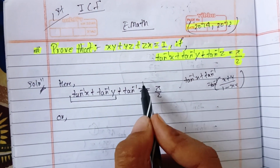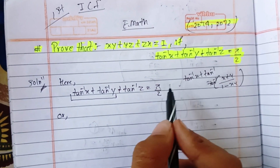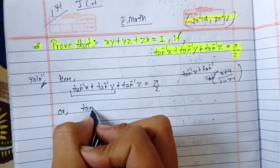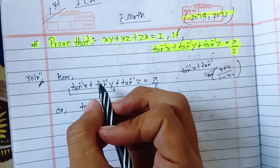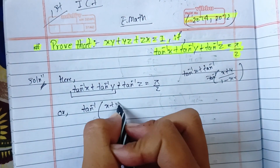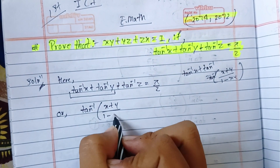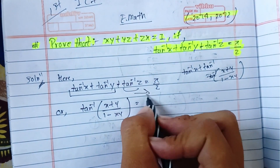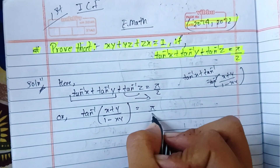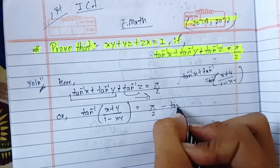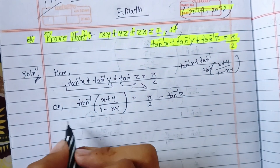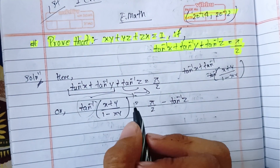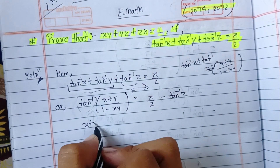We bring this formula in and rearrange. tan⁻¹((x + y) / (1 - xy)) equals π/2 minus tan⁻¹z. Now we apply the formula on the left-hand side: (x + y) / (1 - xy).